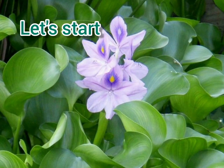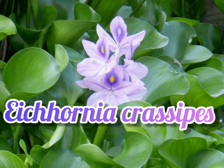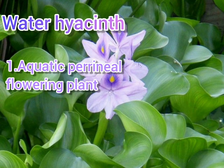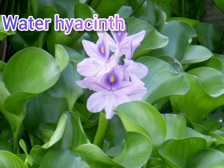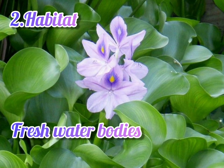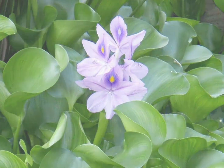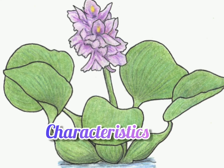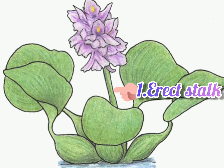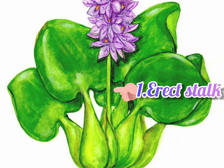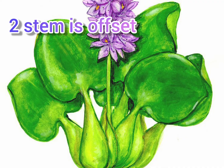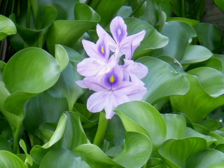Let us start with Eichhornia crassipes. It is an aquatic perennial flowering plant. It grows in fresh water bodies like ponds, lakes, and ditches. An erect stalk supports a single spike of attractive purple flowers. The stem is offset type, which is thick, short, and prostrate.